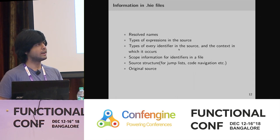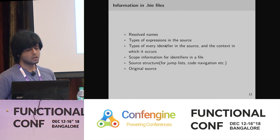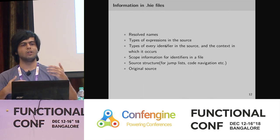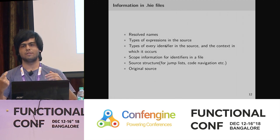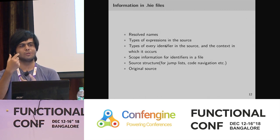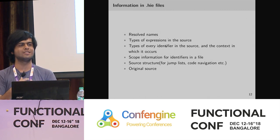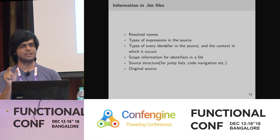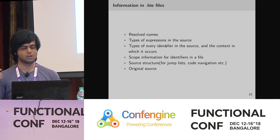This is the stuff available in HIE files. We have resolved names — it resolves all the names so that name shadowing and two names that look the same but aren't actually the same are handled. All that resolving is done by GHC because it has to do that to compile your code. It puts that into HIE files, which tells you what you actually mean when you say map — is it map from Set, is it map from List, and so on.